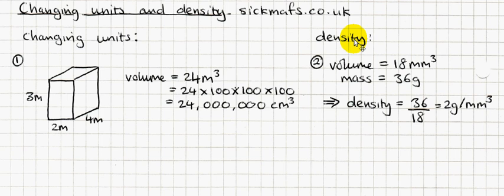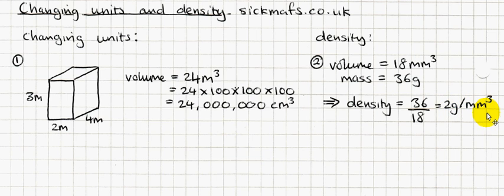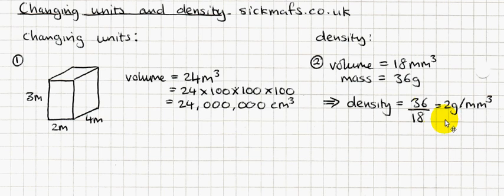Density is the weight of one block. One block may be measured in millimeters cubed or centimeters cubed — the exam paper tells you what size block they want. In this question, they want to know how heavy in grams one millimeter cubed of this stuff weighs. They also tell you the current volume is 18 millimeters cubed — so I've got 18 blocks — and the weight is 36 grams. So 36 grams is the weight of 18 blocks. To find one block: 36 divided by 18 equals 2. So one millimeter cubed weighs 2 grams.